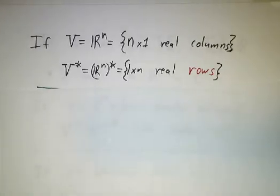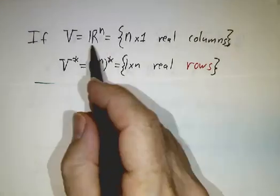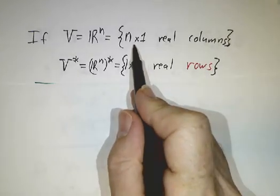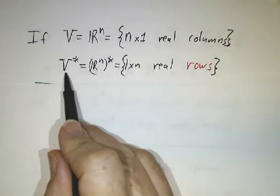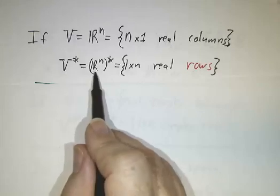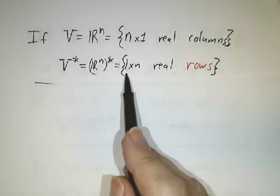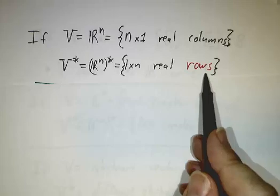We've already seen this in the case of Euclidean space. If V is R^n as the set of all n by 1 real columns, then the dual space R^n star is the set of all 1 by n real rows. That's linear transformations from R^n to the real numbers.